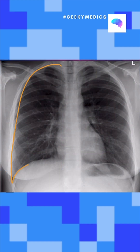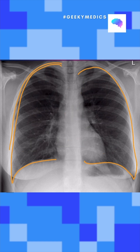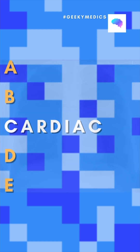B is for breathing. We want to look at the lung fields and make sure that we compare left to right for the upper, middle, and lower zones. We also want to look at the edge of the pleura.